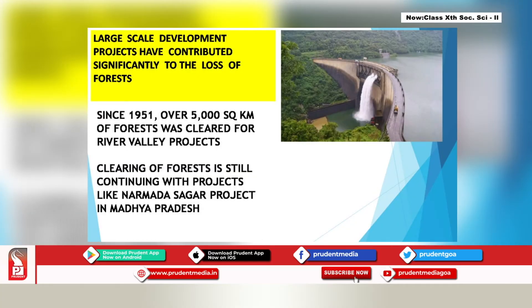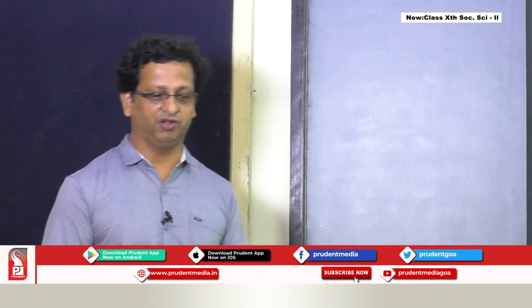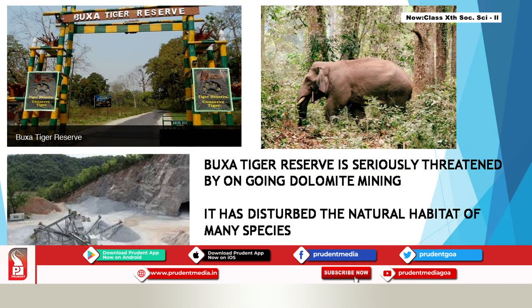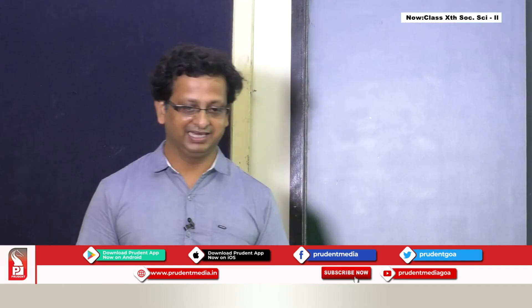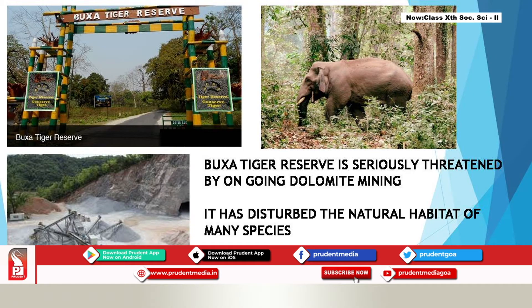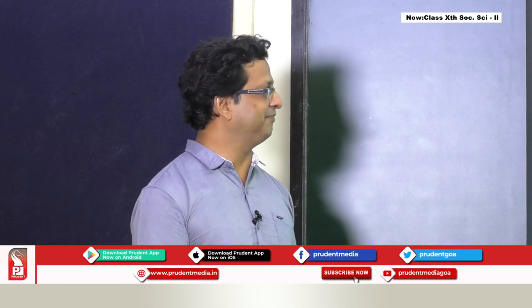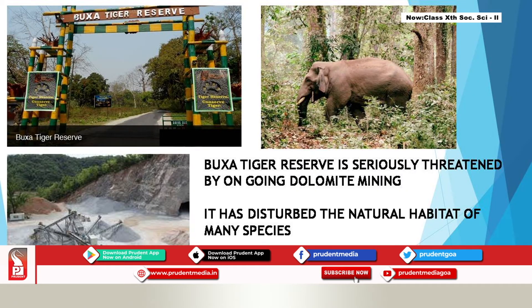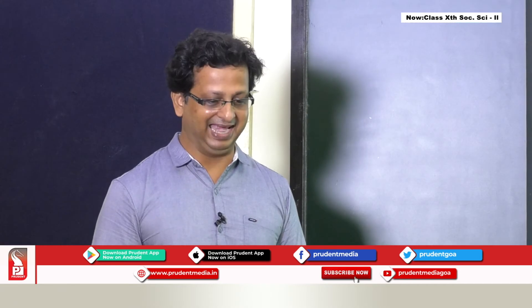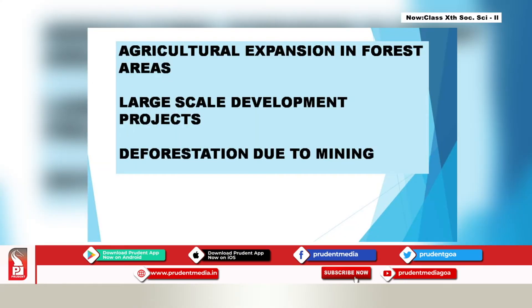Projects like Narmada Sagar project in Madhya Pradesh have also led to agricultural expansion as a reason for forest destruction. Mining is also responsible — for example, Buxa Tiger Reserve in West Bengal is seriously threatened by ongoing dolomite mining, which has disturbed the natural habitat of many species and blocked the migration route of several animals including the great Indian elephant.